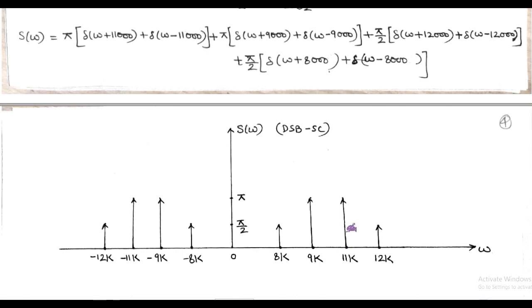From here we can determine the upper sideband and lower sideband spectra. The upper sideband spectra correspond to frequencies ±11000 and ±12000, while the lower sideband spectra correspond to frequencies ±8000 and ±9000. We also explain the nature of frequency shifting after modulation in DSB-SC.